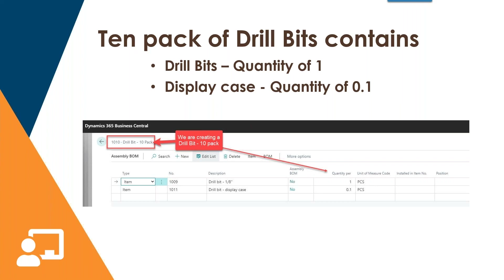For the second type of assembly order, let's walk through how you create this setup in Business Central. We go to the assembly order and denote what item we want to create, then go to the assembly BOM. In the upper left, we are creating the drill bit 10 pack. In the line section, type equals item and the drill bit is selected. This is set up differently — for every finished drill bit quantity, we put in a quantity of one drill bit. Then the display case quantity is divided by the number the case holds: 1 divided by 10 equals 0.1.